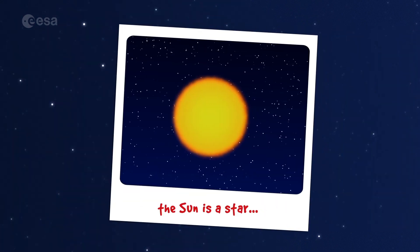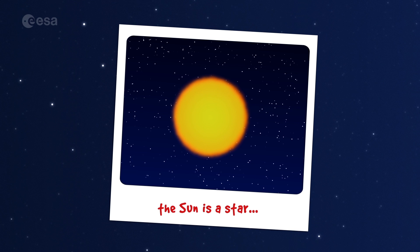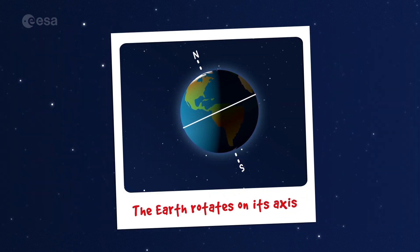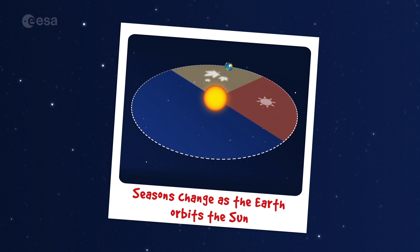We've seen that the sun is a star, that the Earth rotates on its axis, and this gives us day and night, and that the seasons change as the Earth orbits the sun.